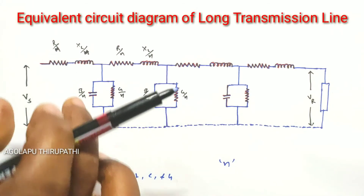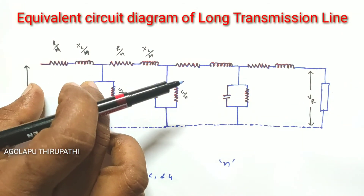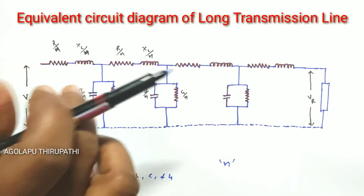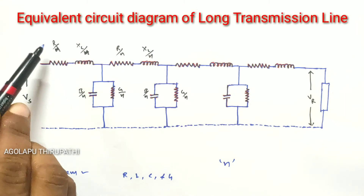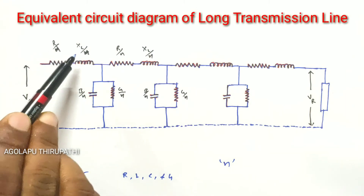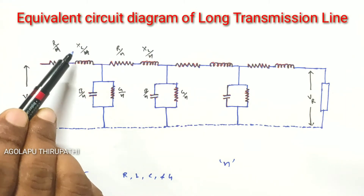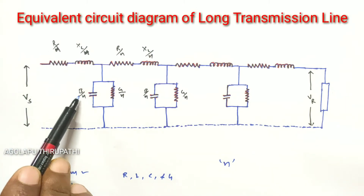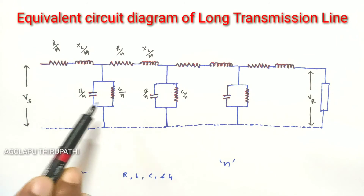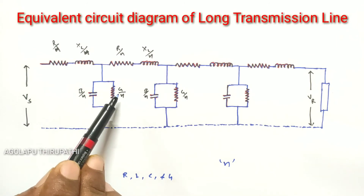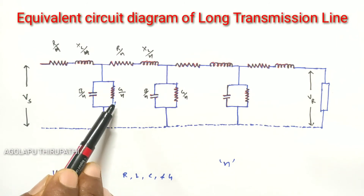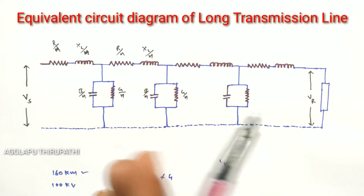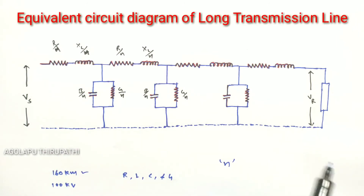Each section has one-nth of the total value. For example, in one section, the resistance value is R/n, inductance value is X/n, susceptance value is B/n, and conductance value is G/n. Similarly, in each subsequent section, each value is one-nth of the total value.